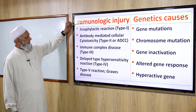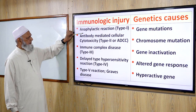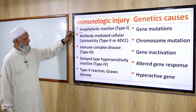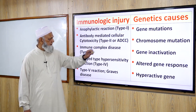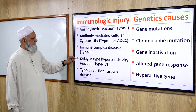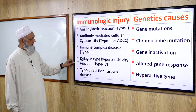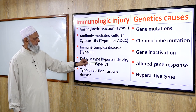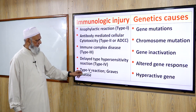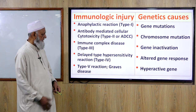Immunologic injury in detail: type 1 is anaphylactic reaction; type 2 is antibody-mediated cellular cytotoxicity (ADCC); type 3 is immune complex-mediated disease; type 4 is delayed hypersensitivity reaction; type 5 reaction — example is Graves' disease.